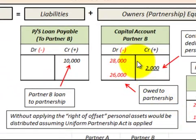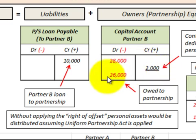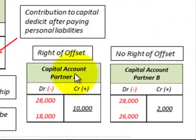Looking at partner B's capital account: they had a deficit of $28,000, and then would be credited $2,000 for the contribution to capital deficit after paying personal liabilities. That $2,000 credit reduces their deficit to $26,000. Meanwhile, the loan payable of $10,000 is still due to partner B from the partnership. Now let's compare the capital account using the right of offset versus not using it.